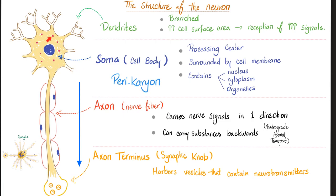The soma or cell body is the processing center surrounded by cell membrane. It contains the cytoplasm, nucleus, nucleolus, and organelles. Some textbooks refer to the soma as the perikaryon — 'karyon' means nucleus, and 'peri' means around — so it's the structure around the nucleus.